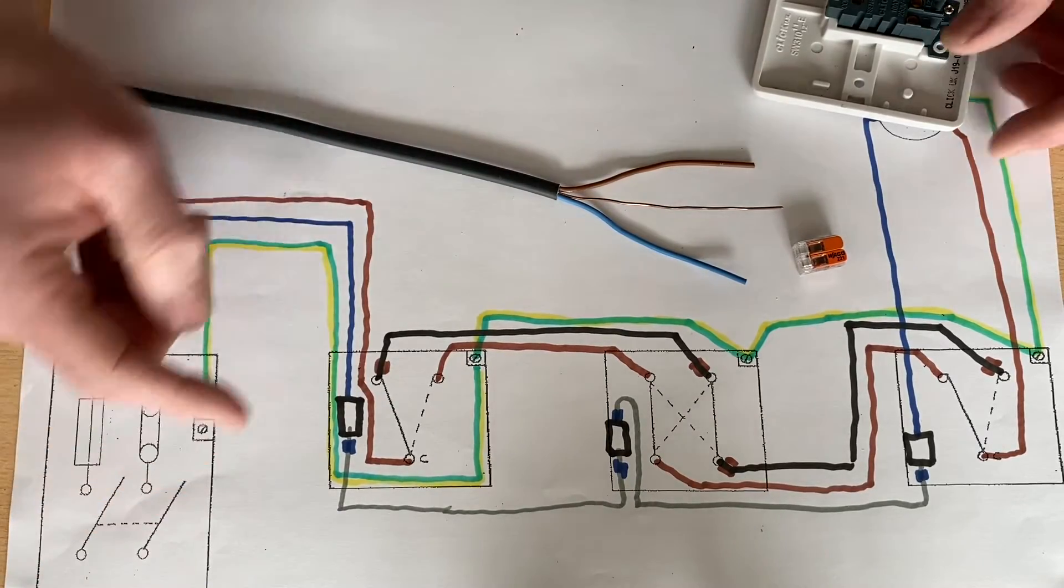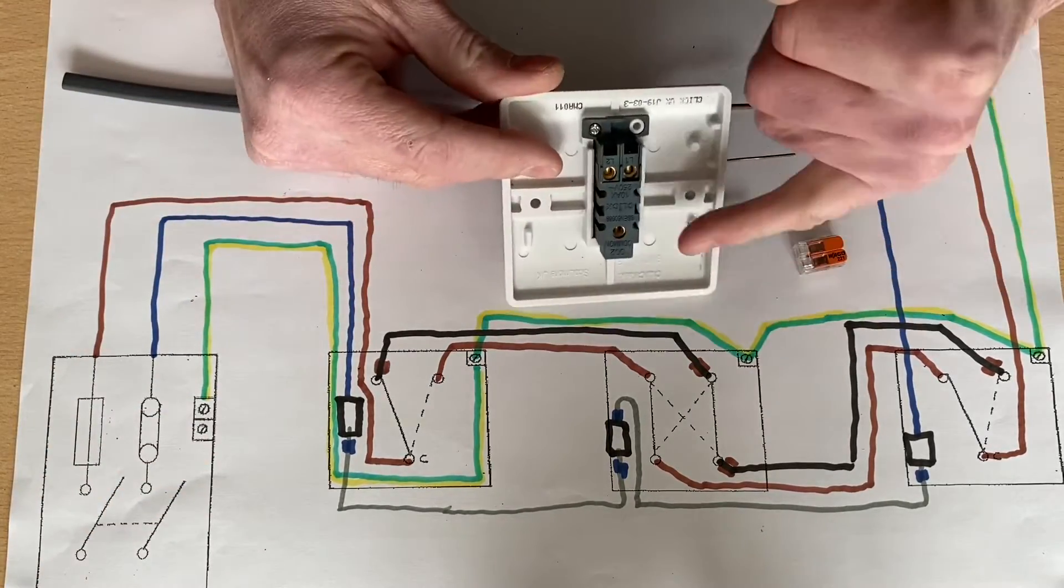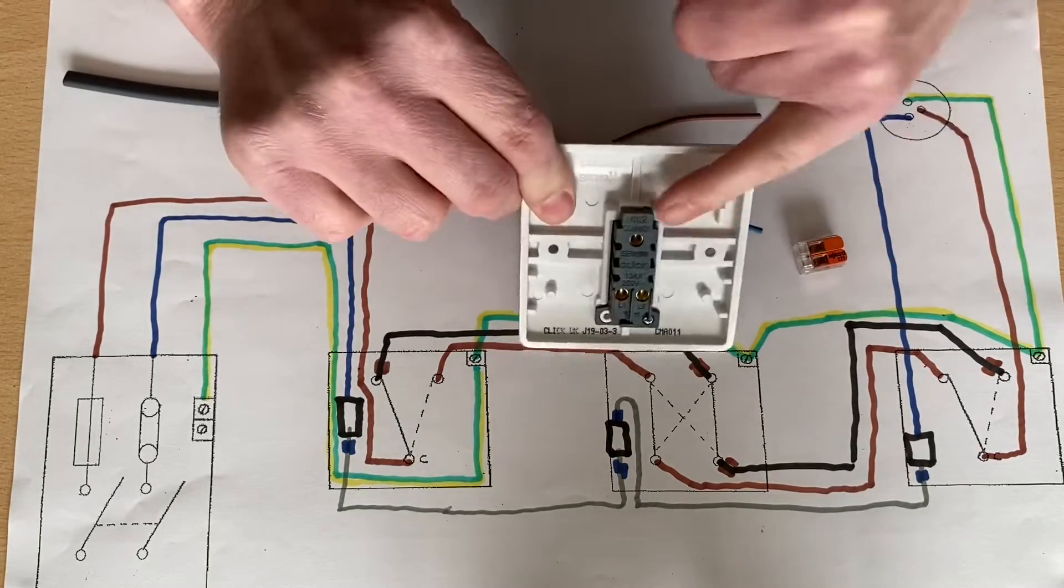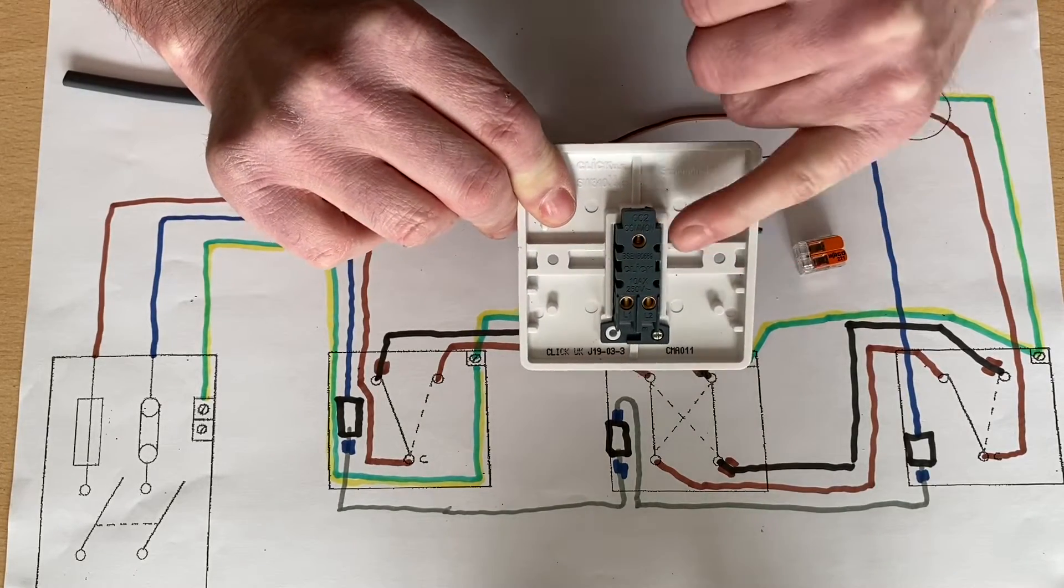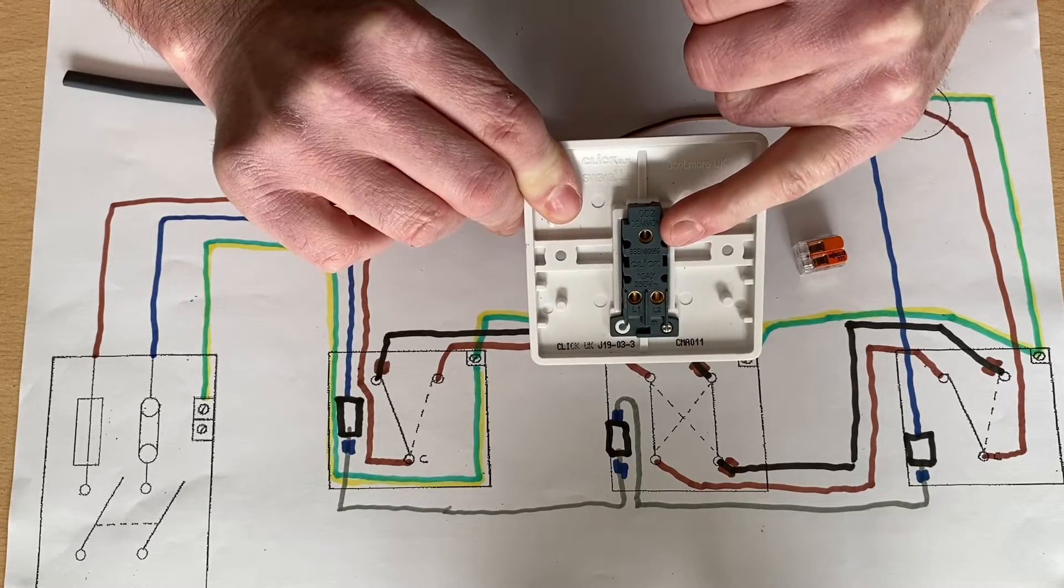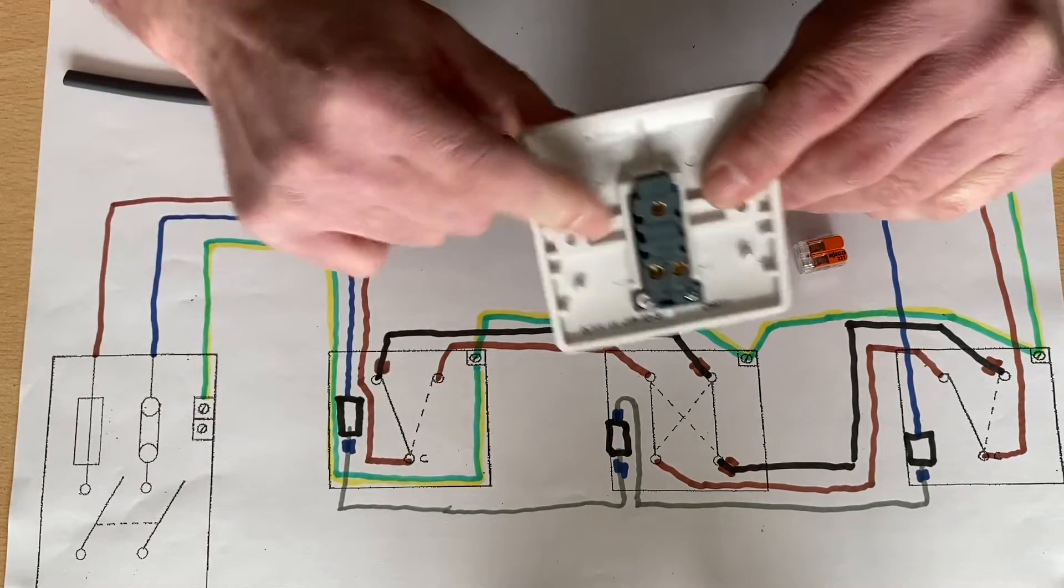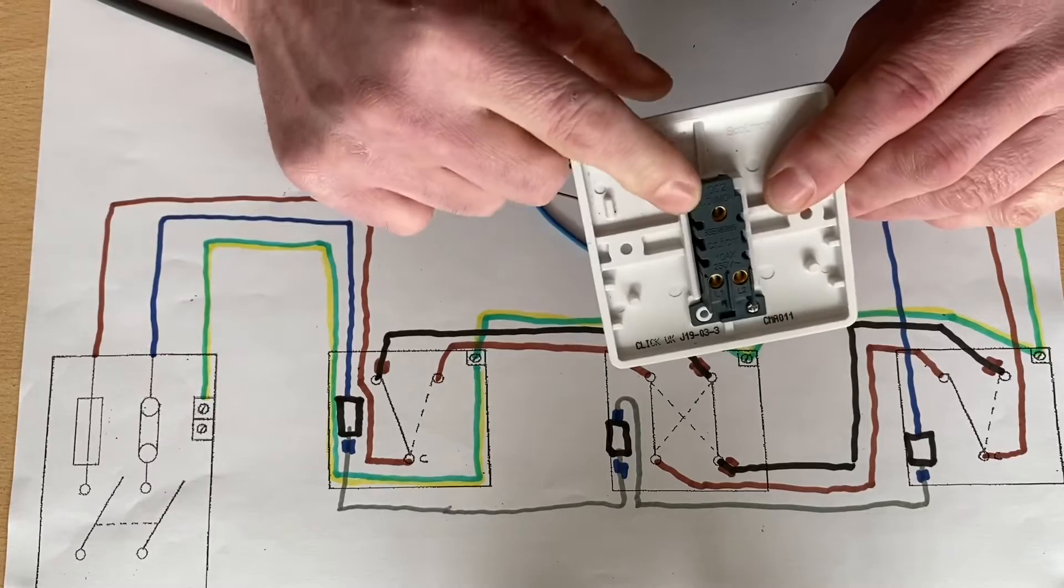So all it would need us to do is take another connection out of the common. So that would be where our permanent line connection is. So one out of here, another one out of here, out of the common.